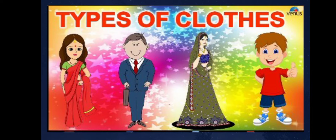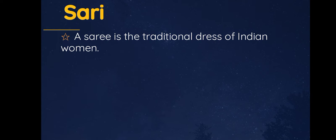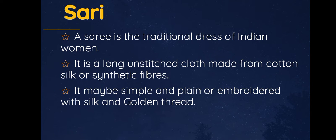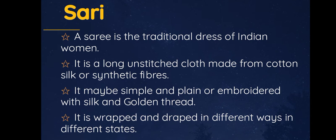Now we are going to see about the types of clothes. There are many kinds of clothes. First of all, the saree. A saree is a traditional dress of Indian women. It is a long unstitched cloth made from cotton, silk and synthetic fibers. It may be simple, plain or embroidered with silk and golden thread. It is wrapped in different ways in different states.